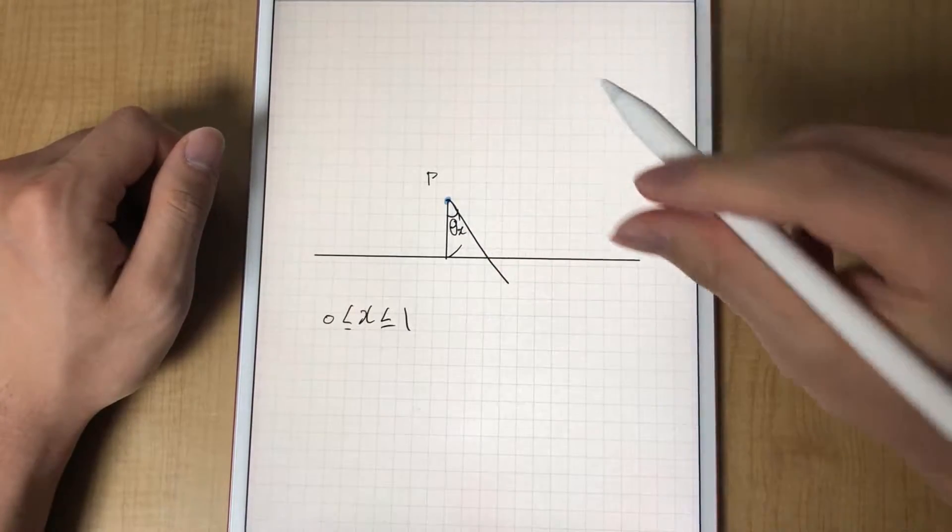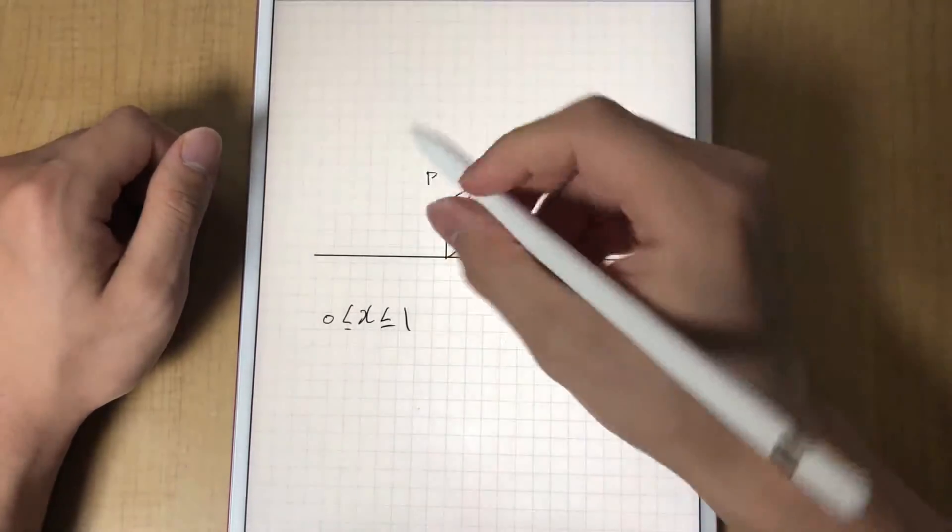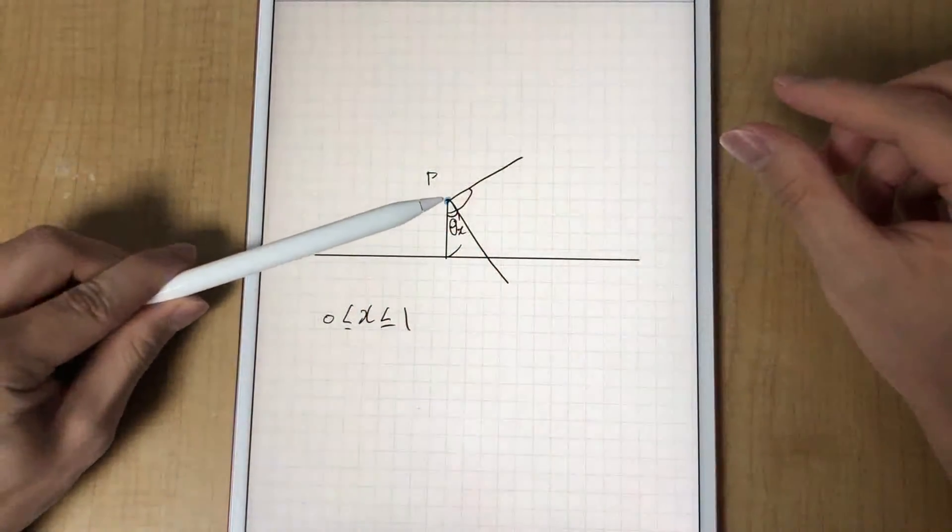If the needle fell like this, this is zeta. And if the needle were like this, this is zeta.